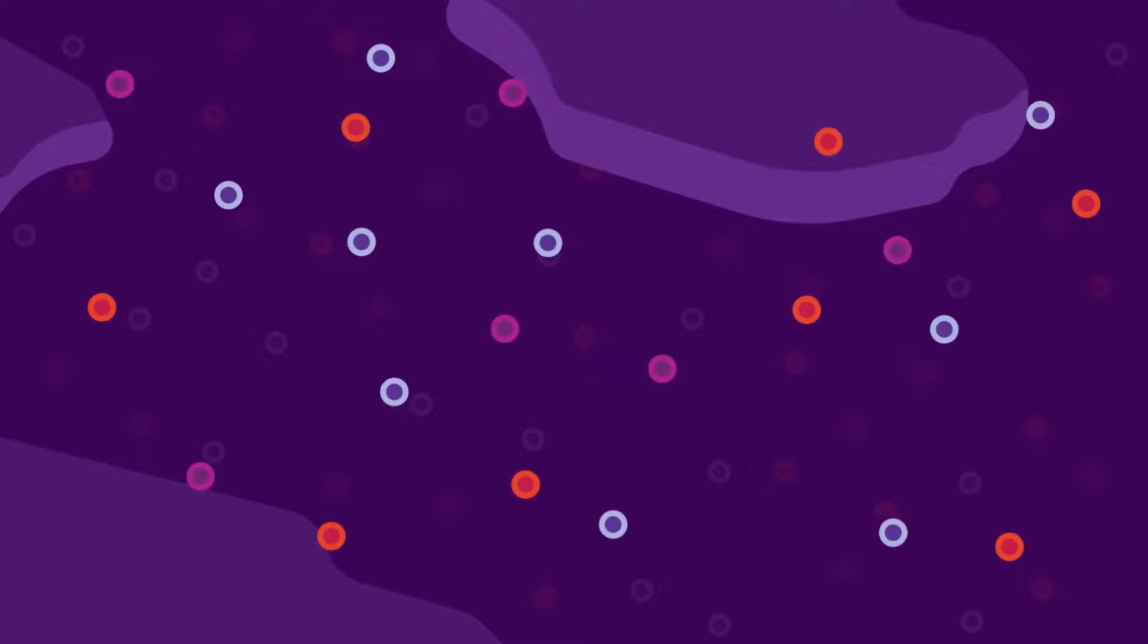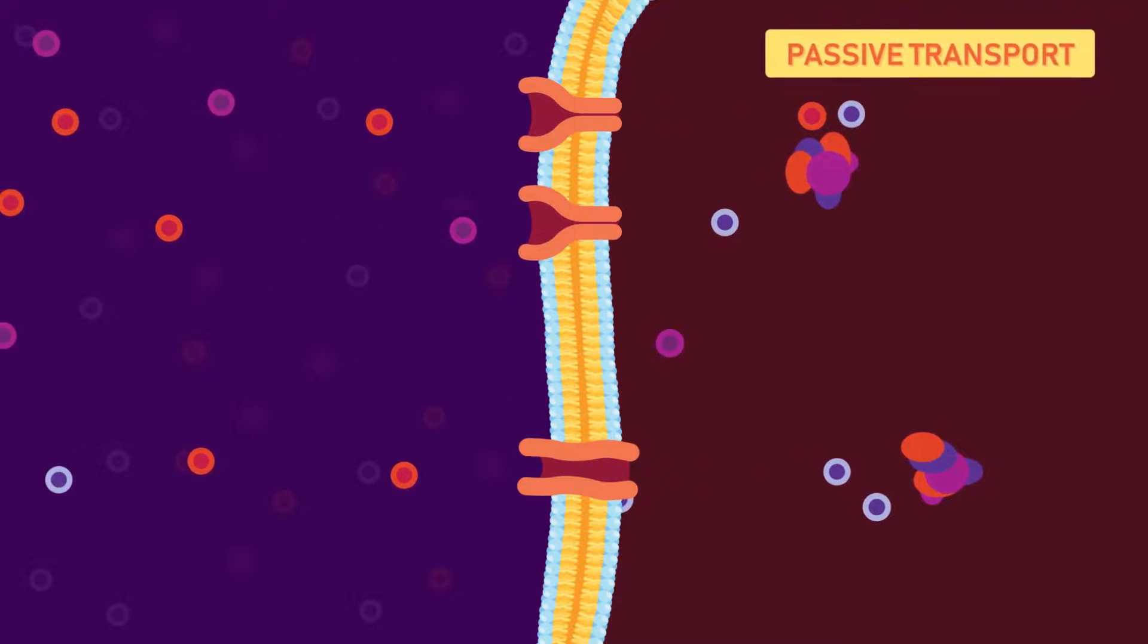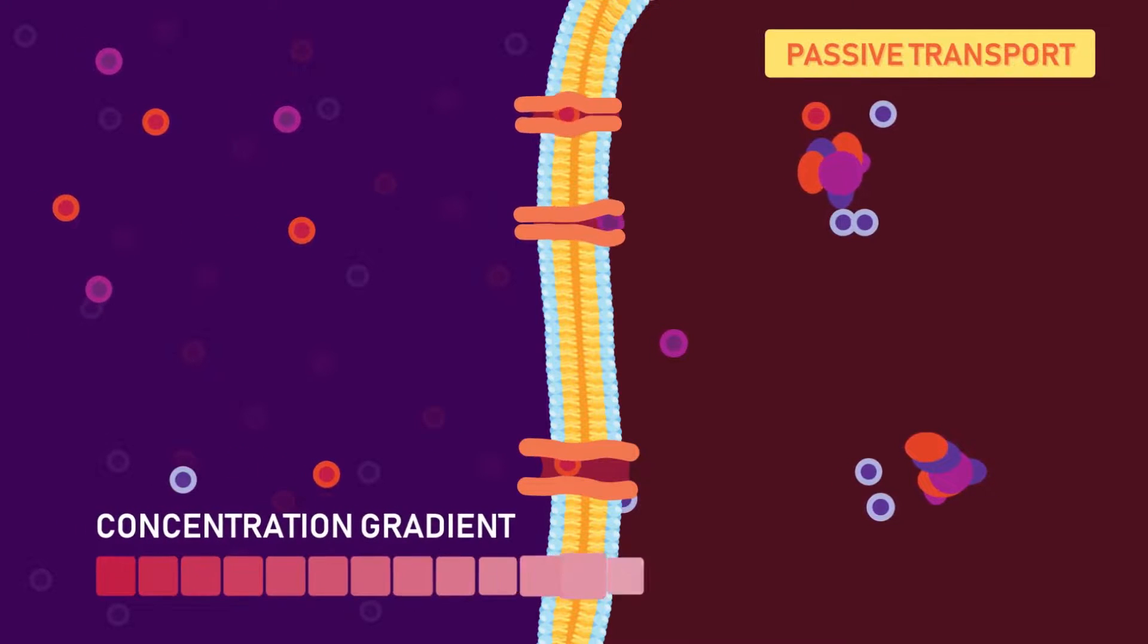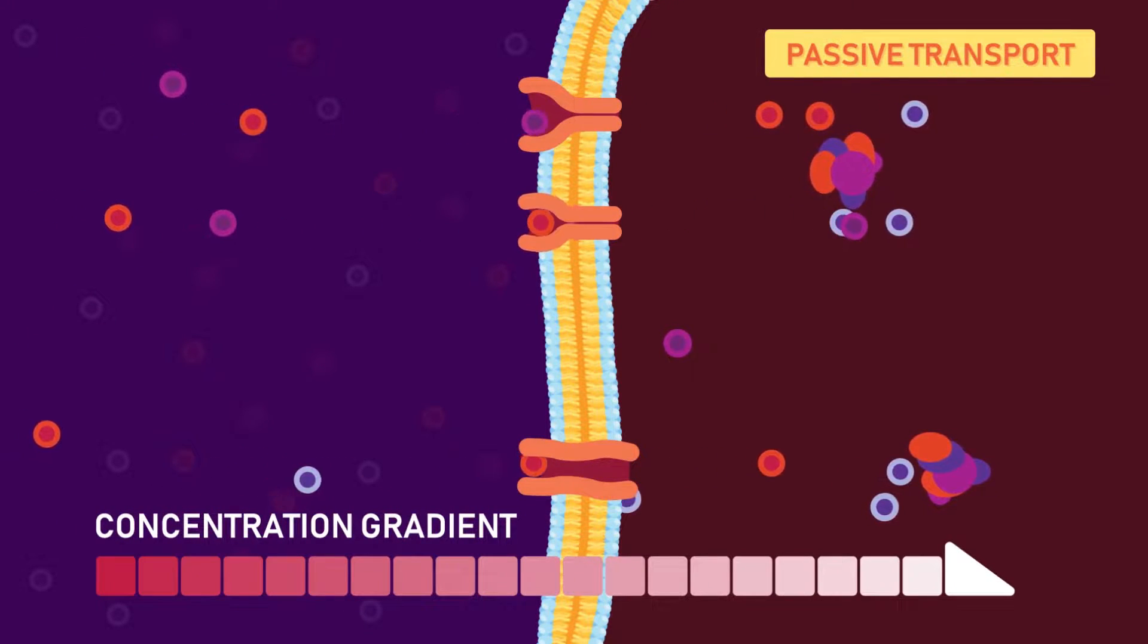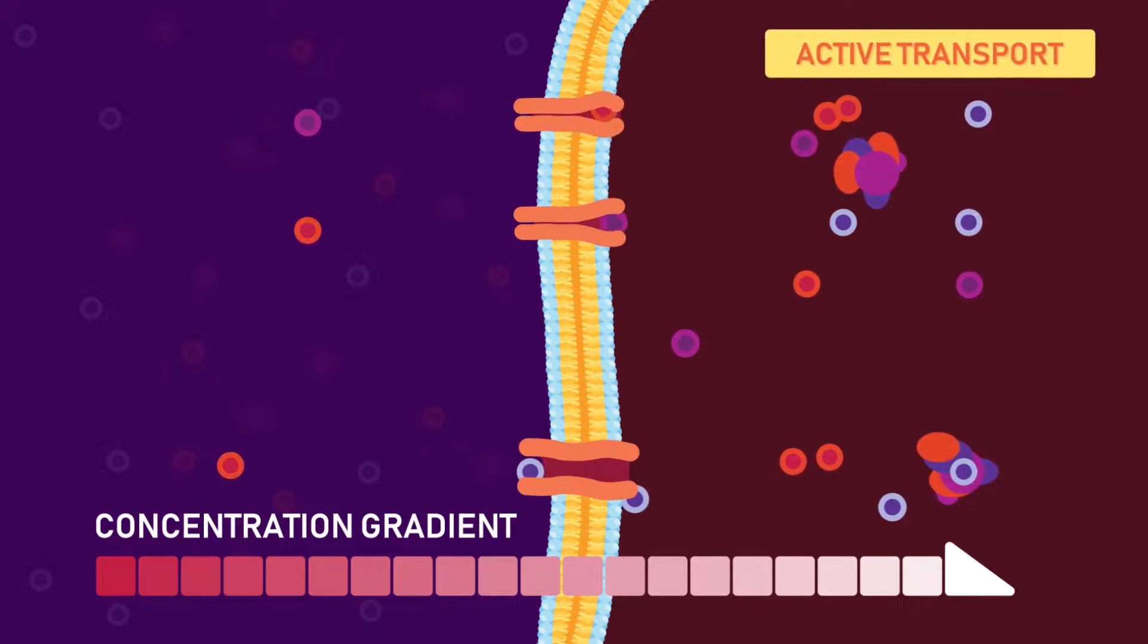Plants take up these mineral nutrients in the form of ions. This uptake of minerals can either be a passive process termed as passive transport, which takes place along the concentration gradient thus requiring no energy, or an active process termed as active transport which requires energy because it occurs against the concentration gradient.